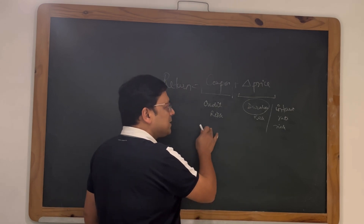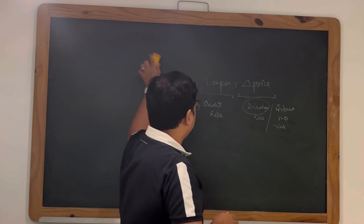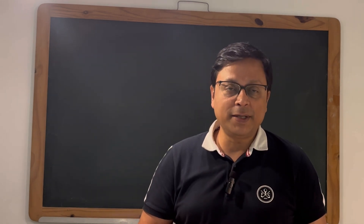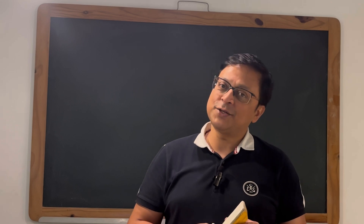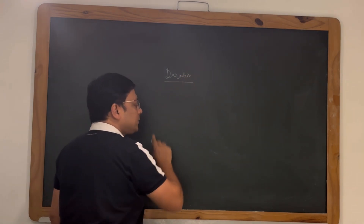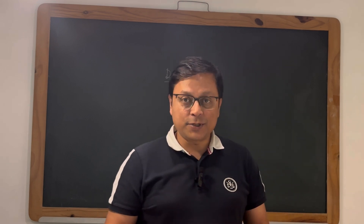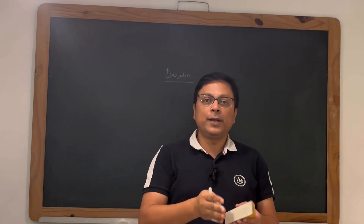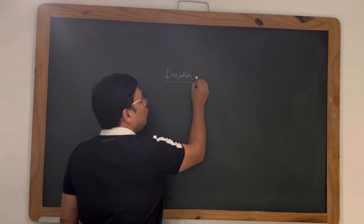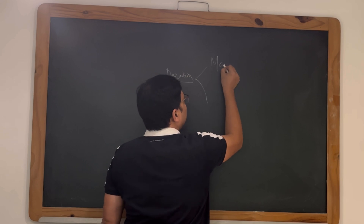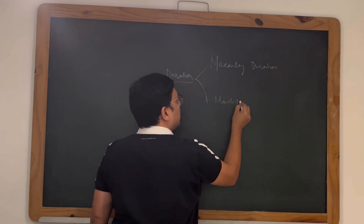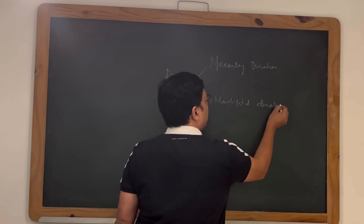Credit risk is relatively easier to understand, so I want to spend a lot of time discussing duration risk. Duration has two distinct types: one is Macaulay duration and the other is called modified duration.